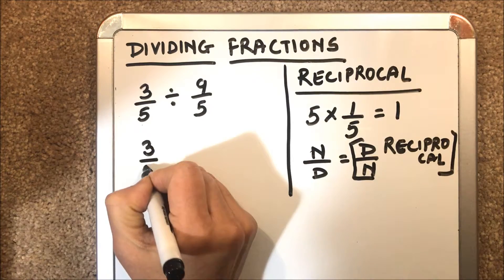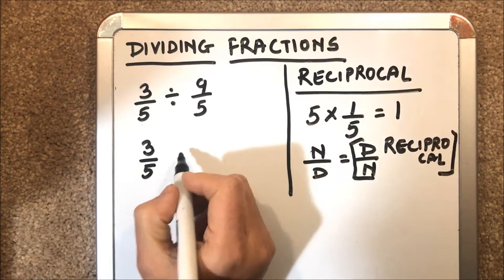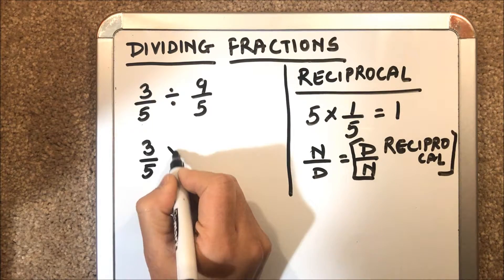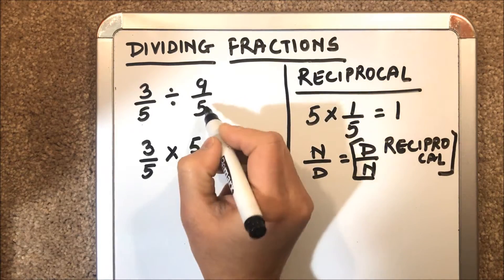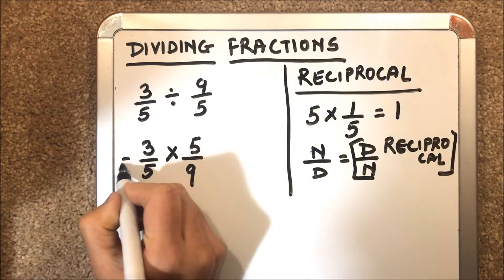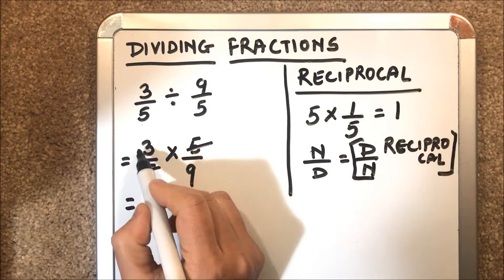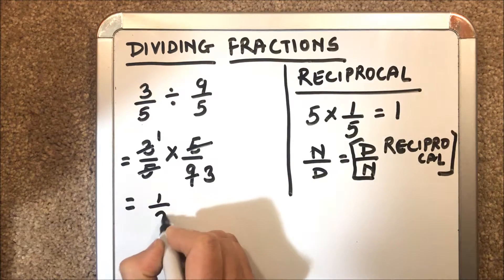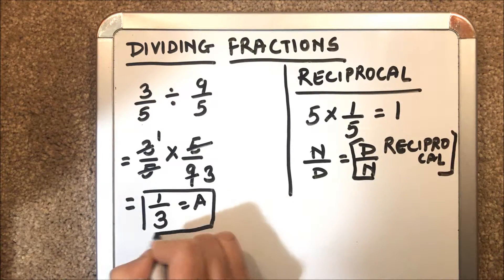We have 3 over 5 as the first fraction and the other fraction is 9 over 5. The reciprocal of 9 over 5 will be 5 over 9 because we've just inverted the numerator to denominator and denominator to numerator. Then we can simplify: 3 times 1 and 3 times 3, so 1 over 3 is our answer. Let's have another example.